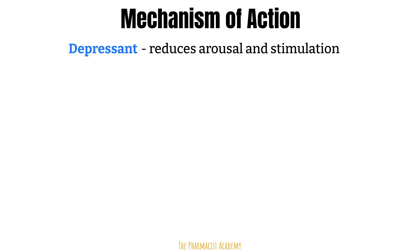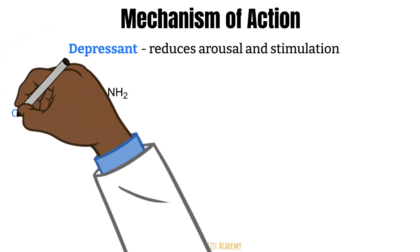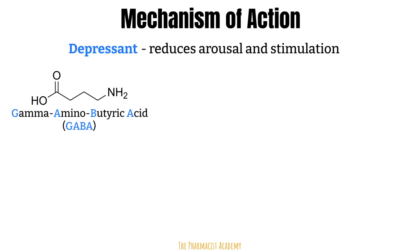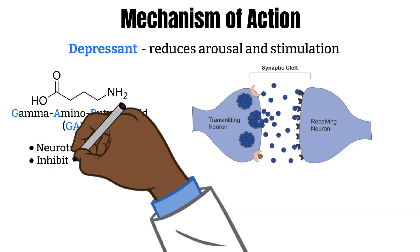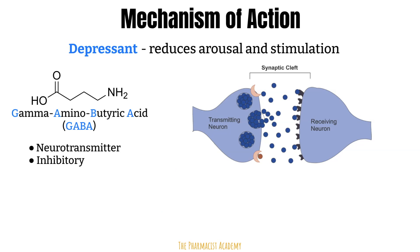Depressants like benzos achieve their effect by working on GABA receptors. GABA stands for gamma-aminobutyric acid. It's a neurotransmitter — a molecule that carries information and transmits it from one place to the next, also referred to as a chemical messenger. The message comes from a nerve cell or neuron, and these neurotransmitters go to the target cell and release information. When GABA binds to its target cell, the message it releases is an inhibitory message, which slows down how fast cells trigger an action potential, leading to depressant effects.